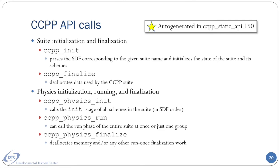The CCPP physics run call is where the run stage of an entire suite or group within a suite is executed. These calls are placed within the time integration loop of the host application and are thus executed every physics time step. For the UFS, all of these API calls are written into an additional software layer found in a file called ccppdriver.f90 under fe3.ccpp.driver, although some host models use the API calls directly in their code without the additional software layer.